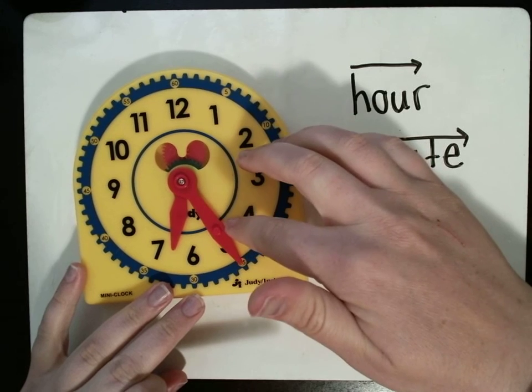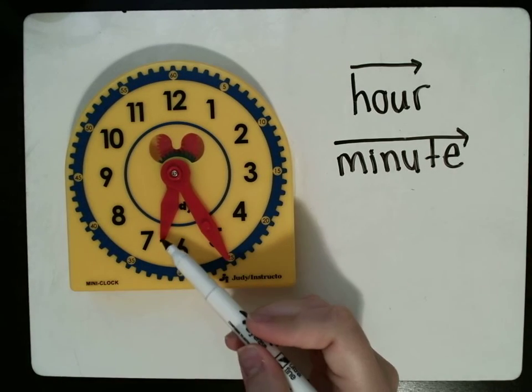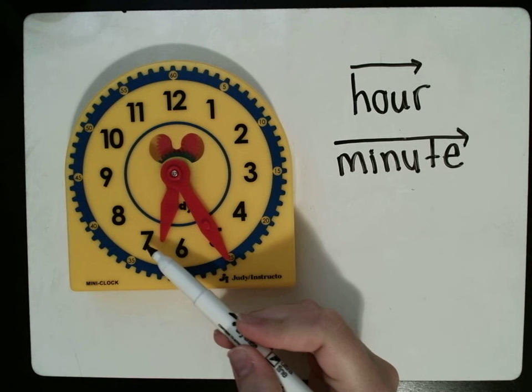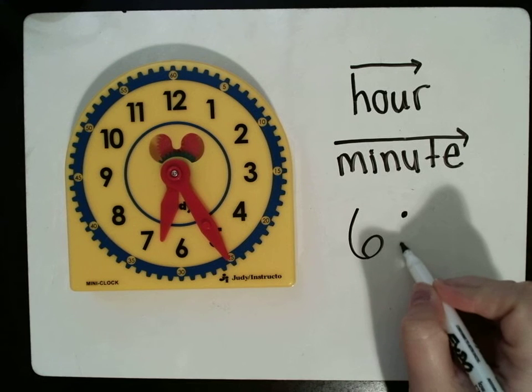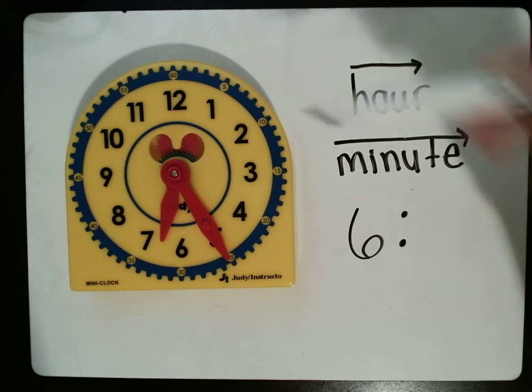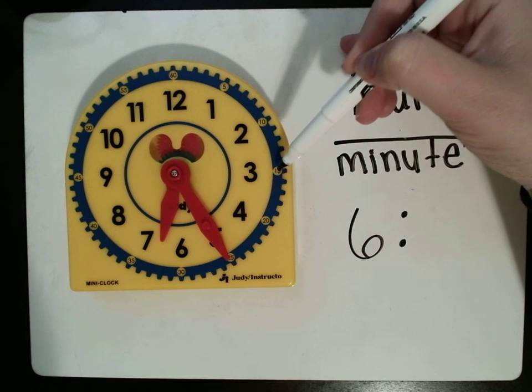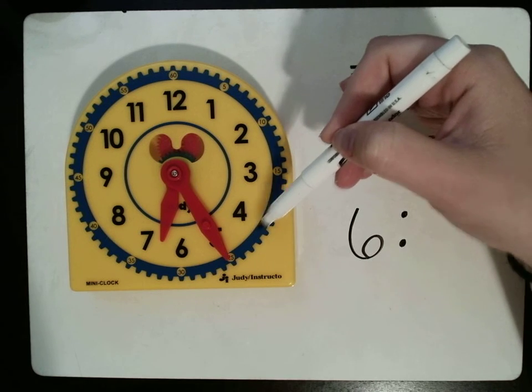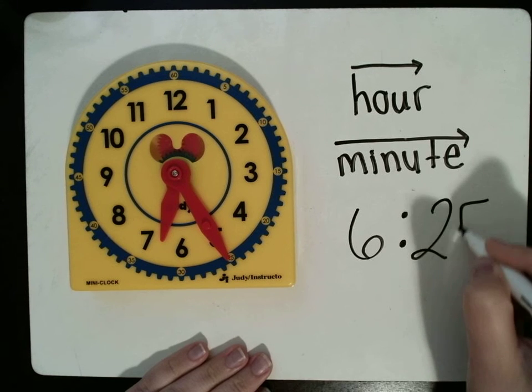Let's do this time. So, first, we're going to look at the hour hand. It is not at the 7 yet. So, that means it is still 6. Then we have to count. 5, 10, 15, 20, 25. So, right now, it is 6:25.